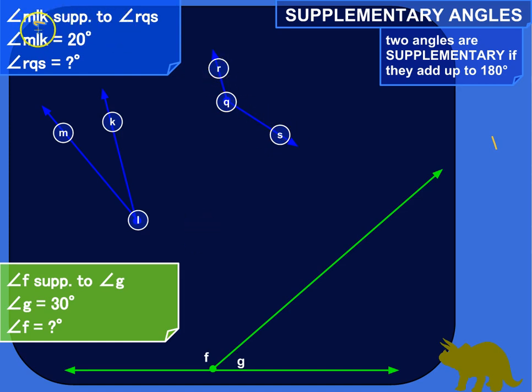And so our first piece of information here is angle MLK is supplementary to our angle RQS. And you might see supplementary abbreviated like that, SUP2, or it might be written out supplementary. So what that means is if we add up the angle measurements of these two, they should equal 180 degrees. That's what it means to be supplementary.